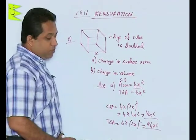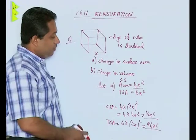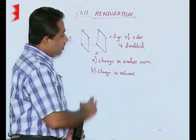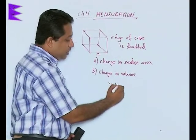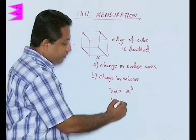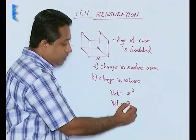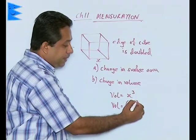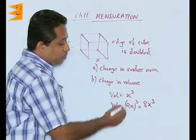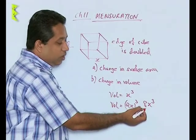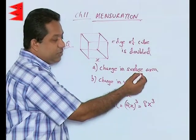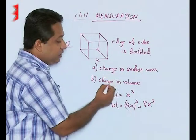Now for the second part — the change in volume. The volume formula is side cubed. The original volume is x³. When the side is doubled to 2x, the new volume is (2x)³ = 8x³. Compared to the original, the new volume has become 8 times. So the area increases by 4 times but the volume increases by 8 times.